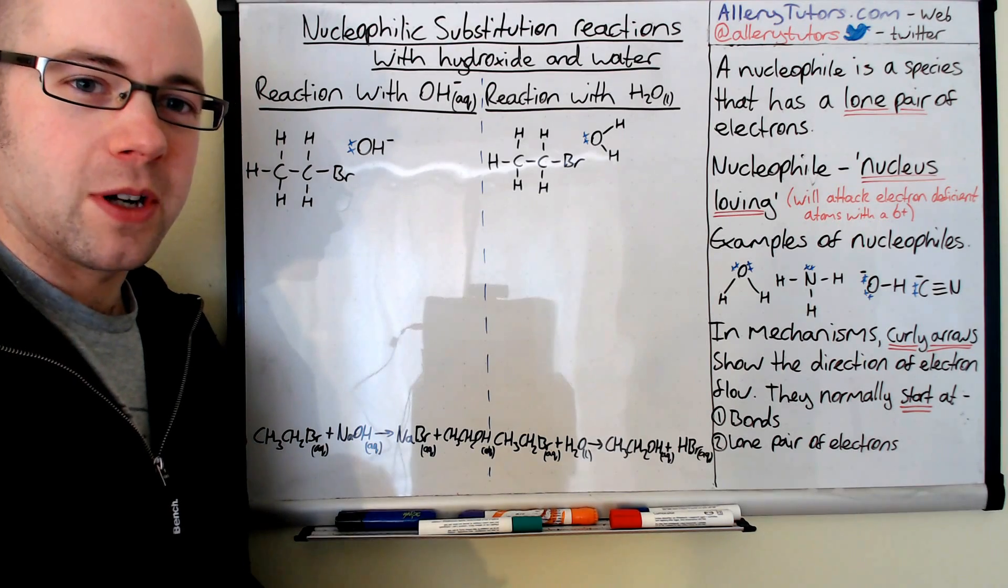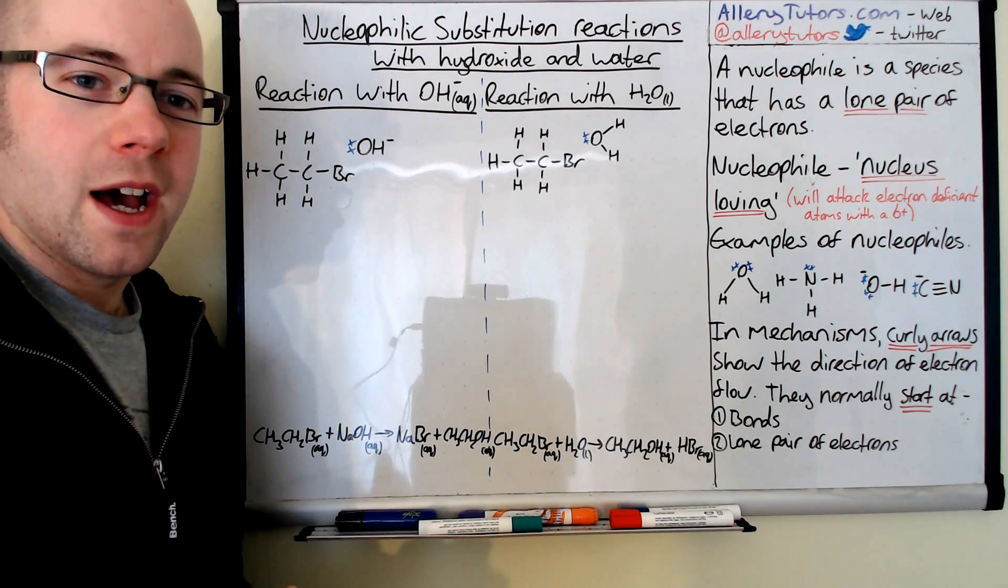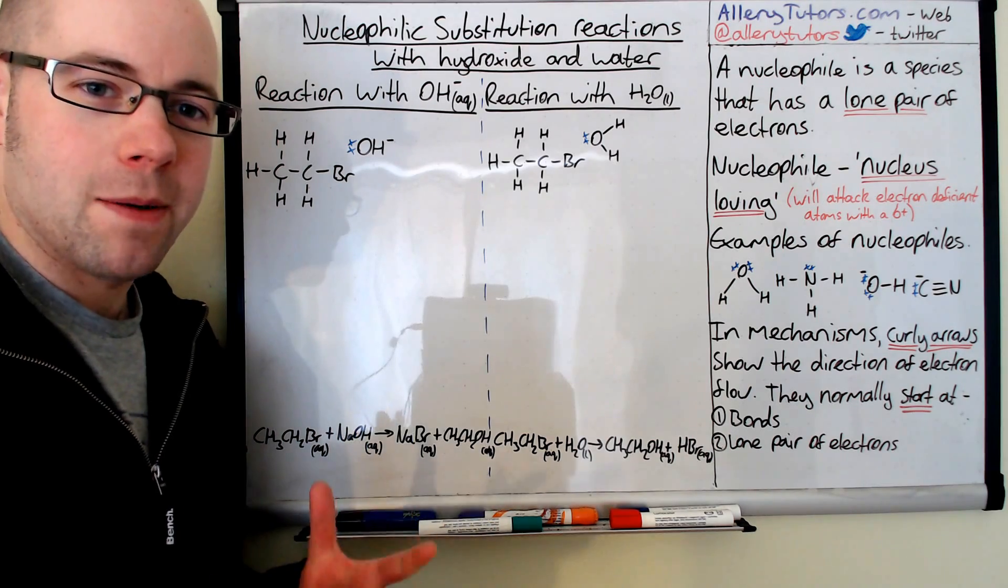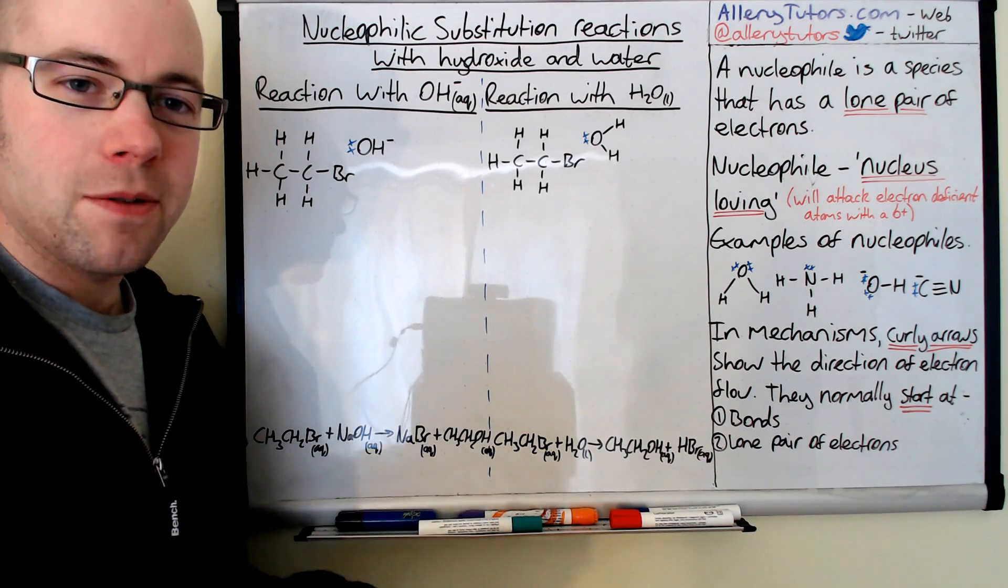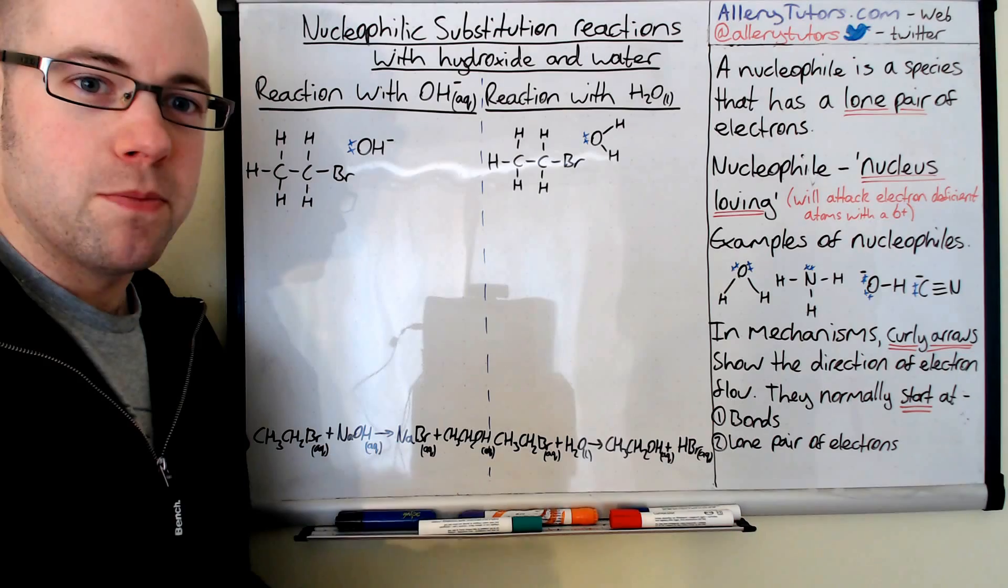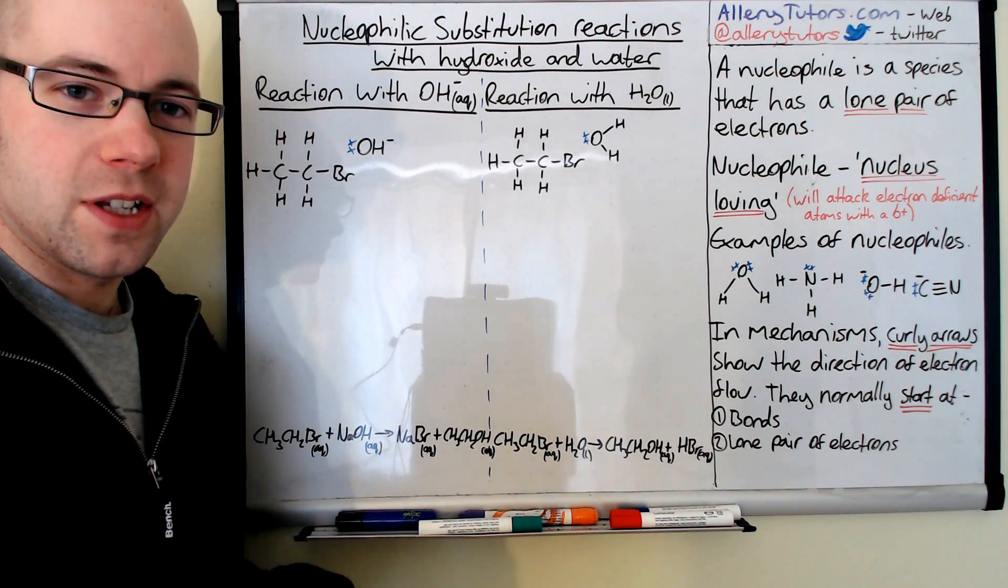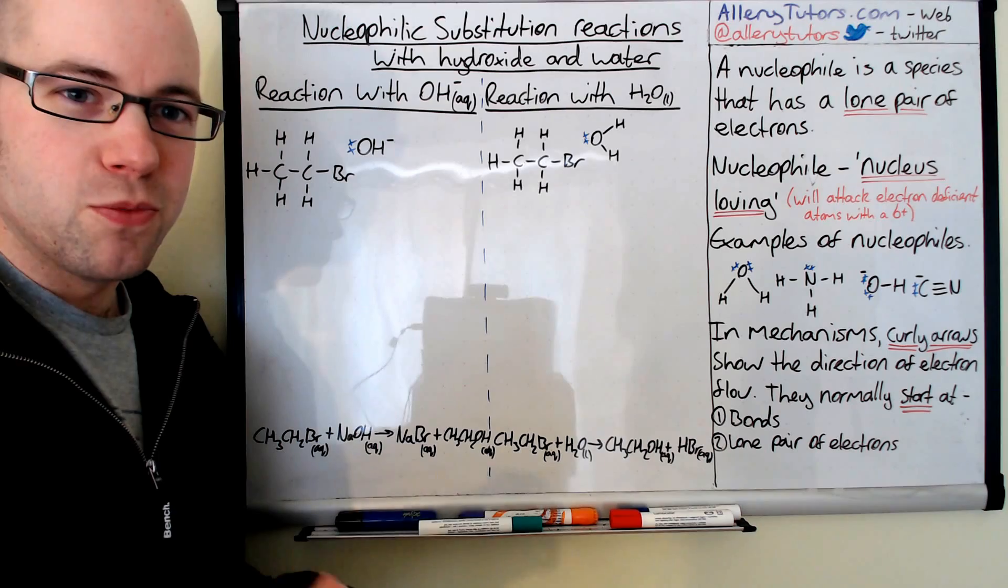In this video we're going to look at the mechanisms behind these two reactions. Mechanisms are really important in chemistry because they help to show us how the reaction actually happens and it's all to do with the movement of electrons. So you're going to see a lot of curly arrows in this video and a lot of electron movement as well.